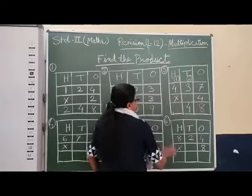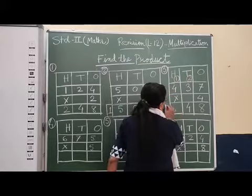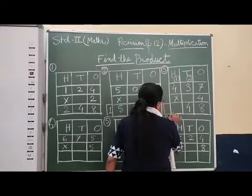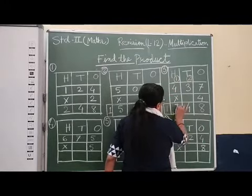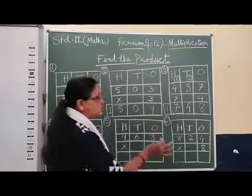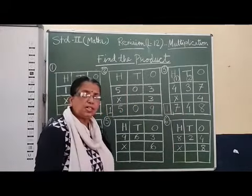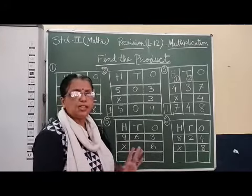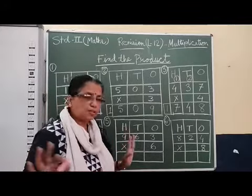Then four times four, sixteen, plus one, seventeen. Once again we will increase this. We will write seventeen like this. Clear? This you have learnt only, I am revising so that you can do practice and understand it in a better way.